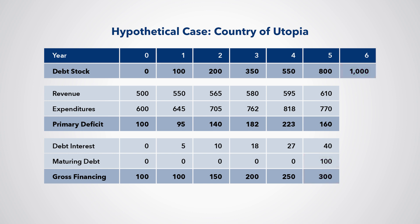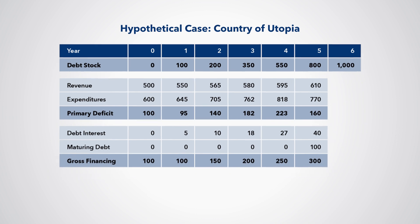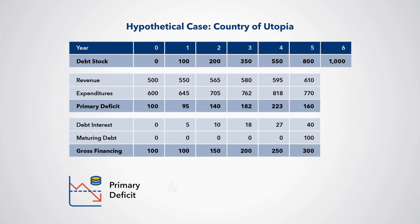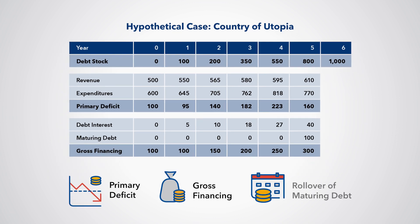In discussing the stock of debt and the debt flow from one period to the next, we have also covered a few additional concepts: the primary deficit, gross financing, and the rollover of maturing debt. This video is worth watching again to make sure that you have a good understanding of the interplay between the concepts of debt flow, debt stock, debt interest, and the primary deficit.